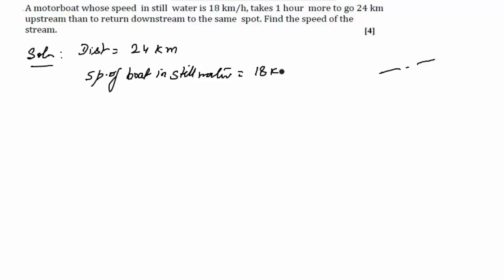You need to find the speed of the stream, so we will assume let the speed of stream be equal to x km/h. There are two categories: speed upstream and speed downstream.